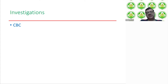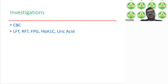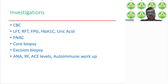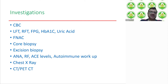Investigations generally done for patients presenting with lymphadenopathy include: CBC, liver function test, renal function test, fasting plasma glucose, glycosylated hemoglobin, uric acid, and then FNAC, core biopsy, or excision biopsy depending on the situation. Also autoimmune markers like ANA, rheumatoid factors, ACE levels, and other autoimmune workup, chest X-ray, and then CT scan or PET-CT scan depending on your differential diagnosis.